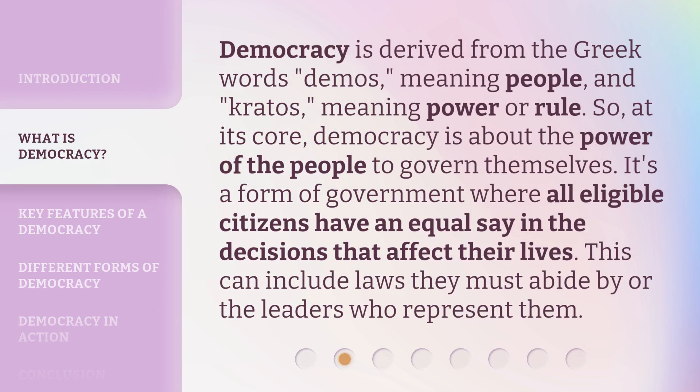Democracy is derived from the Greek words 'demos,' meaning people, and 'kratos,' meaning power or rule. So, at its core, democracy is about the power of the people to govern themselves. It's a form of government where all eligible citizens have an equal say in the decisions that affect their lives, including laws they must abide by or the leaders who represent them.